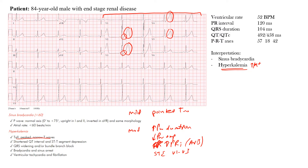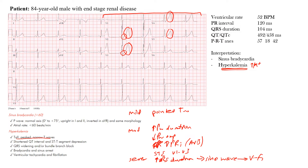We don't see ST elevation here — the main thing we're going for is hyperkalemia. In severe hyperkalemia, you may also see an increase in the QRS duration, where the width widens. From there you can get a sine wave pattern, and then from the sine wave you can progress to ventricular fibrillation, or V-fib.